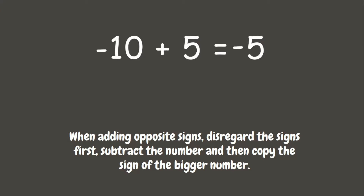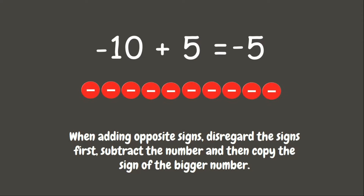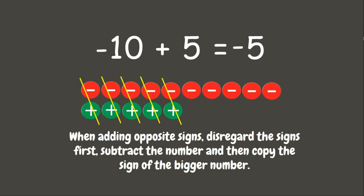Let us check our answer using counters. We have 10 negatives plus 5 positives. A pair of 1 negative and 1 positive equals 0, so we cancel the pairs. We have 5 negatives left, therefore our answer is correct.